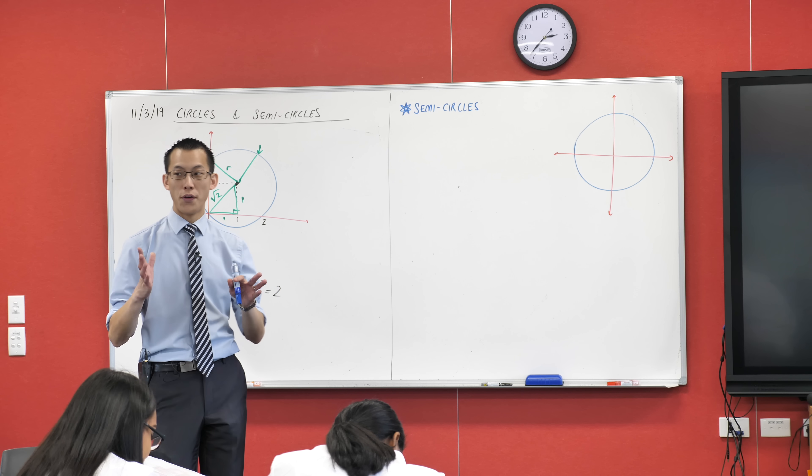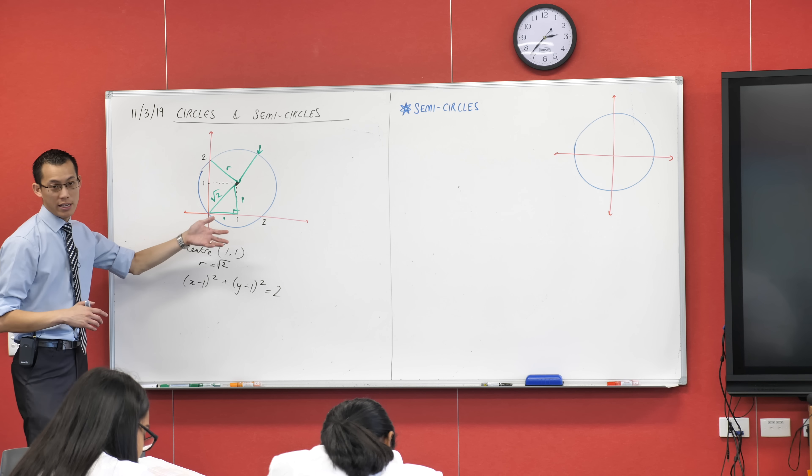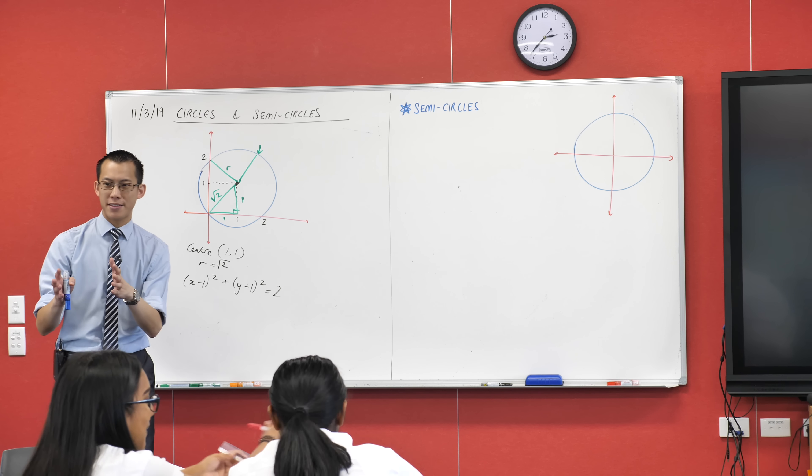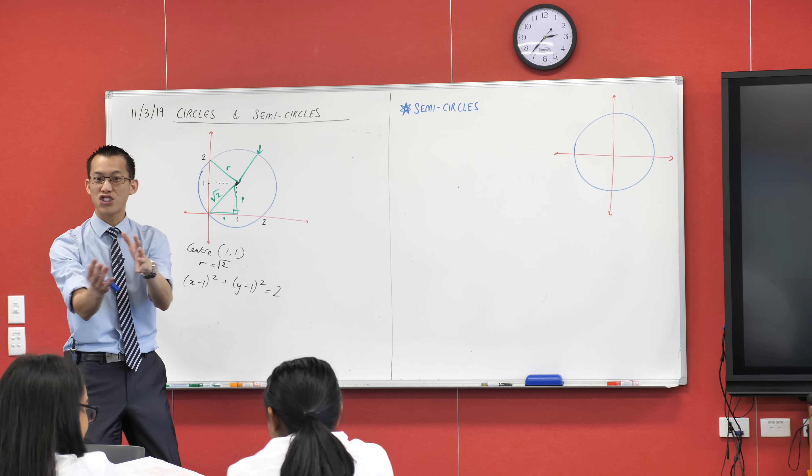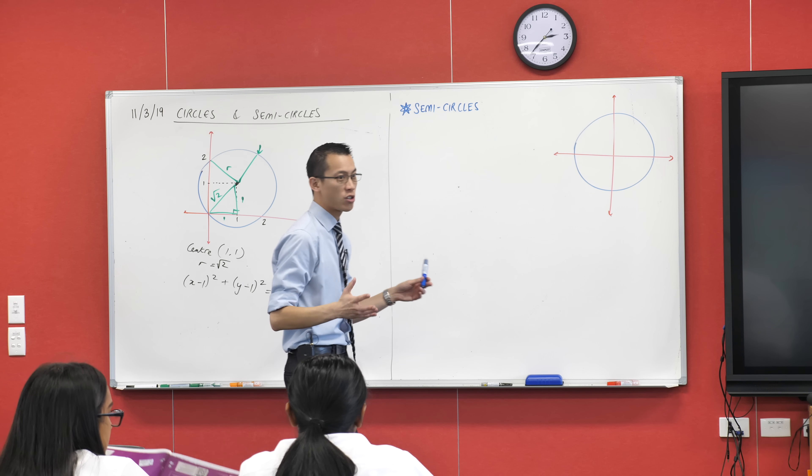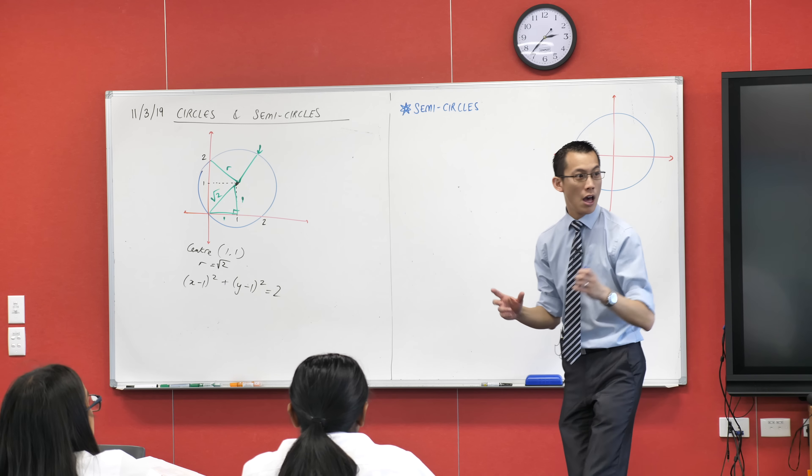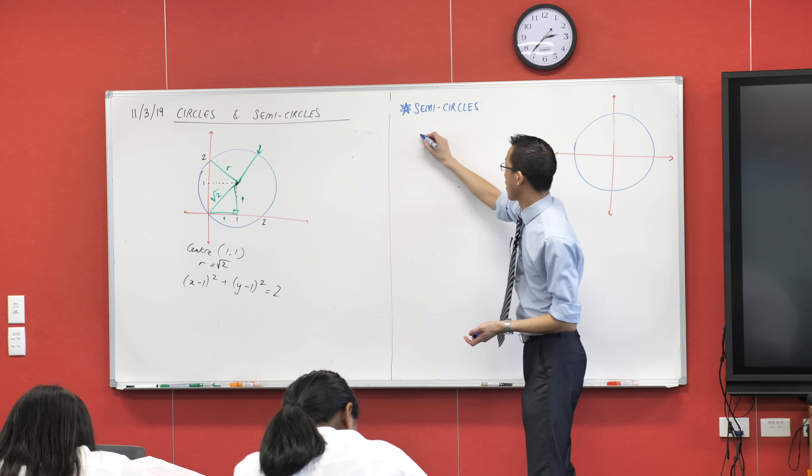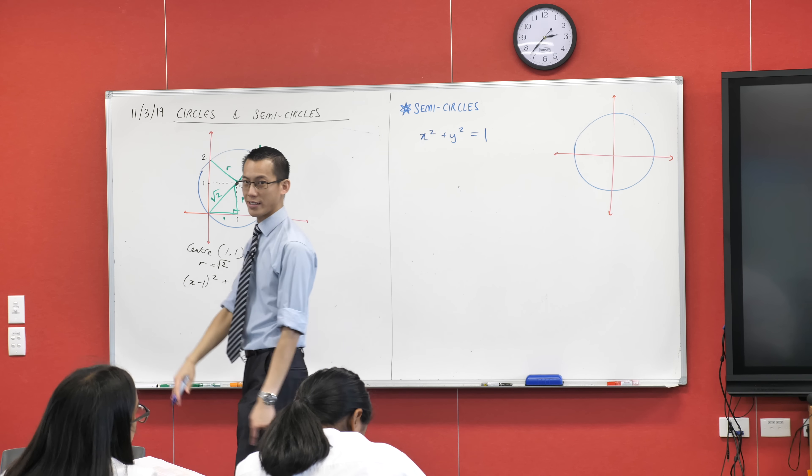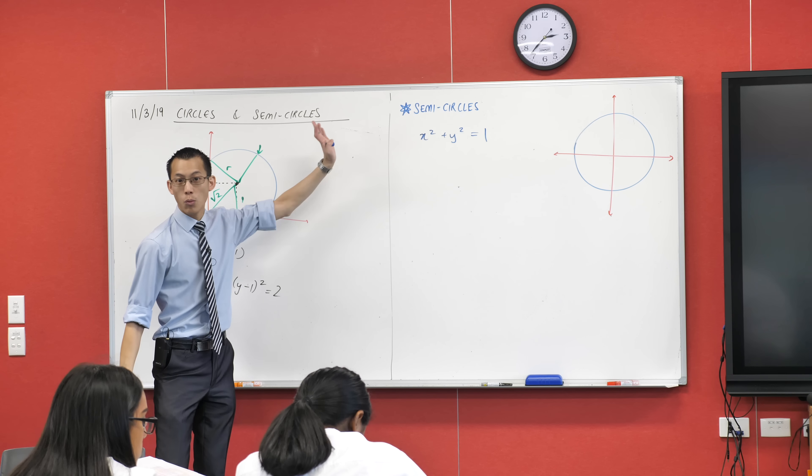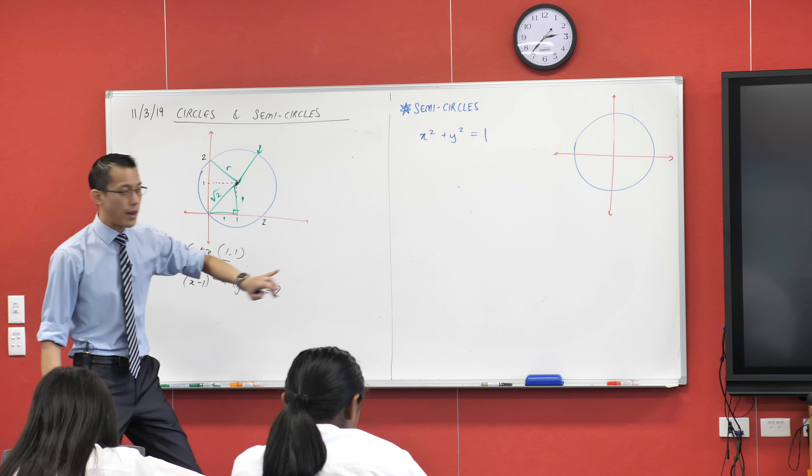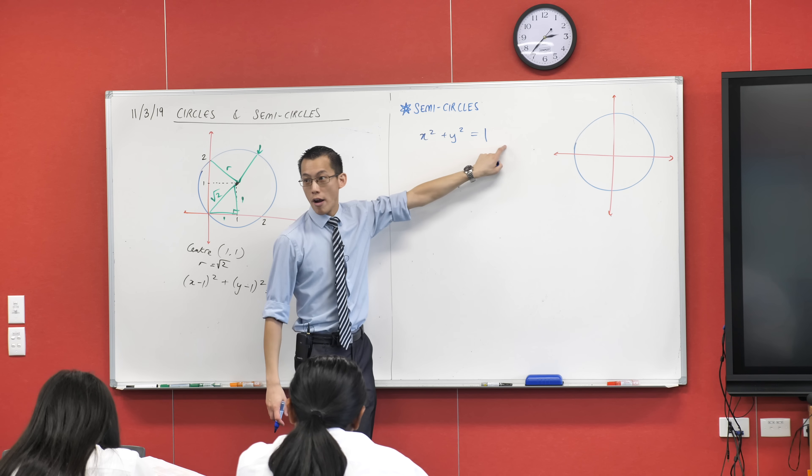To understand semicircles, before we get to all these weird, wacky, crazy ones with weird centers and weird radii, it's often helpful in math to start with the simplest version. What was the simple object we started today with? The unit circle, right? x squared plus y squared equals 1. It's a nice, simple object, and we can use it to work out what semicircles are like.